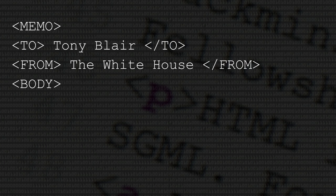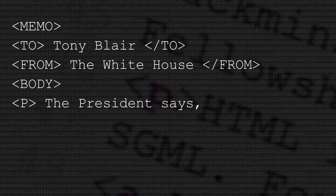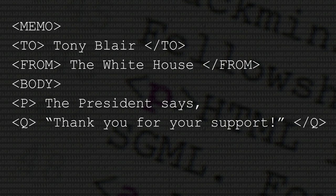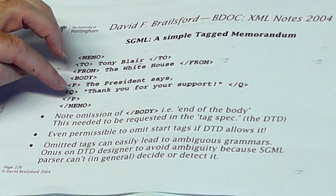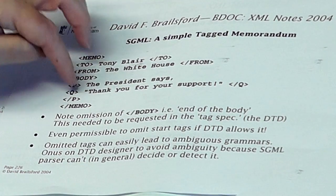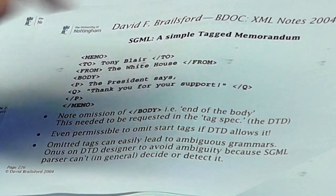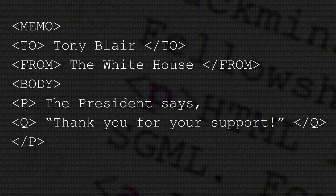Here's the body of the memo. It's got to be a paragraph, denoted with a P. Here's the free text — 'the President says' — and here is the nested quote inside the paragraph, denoted with a Q tag. 'Thanks for your support.' End of quote. End of paragraph. End of memo.